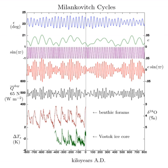The Earth's current orbital inclination is 1.57 degrees. Earth presently moves through the invariable plane around January 9 and July 9. At these times, there is an increase in meteors and noctilucent clouds.